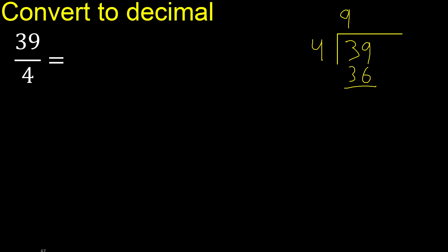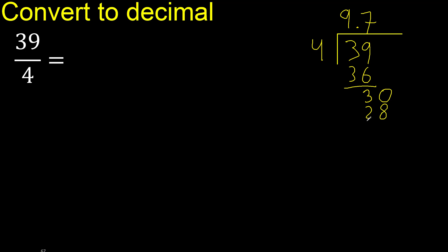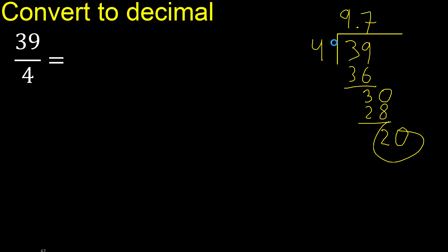39 minus 36 is 3. There is no next number, so we complete with a decimal point and bring down a 0 to get 30. 4 multiplied by 7 is 28. 30 minus 28 is 2. Again, no next number, so bring down another 0 to get 20.